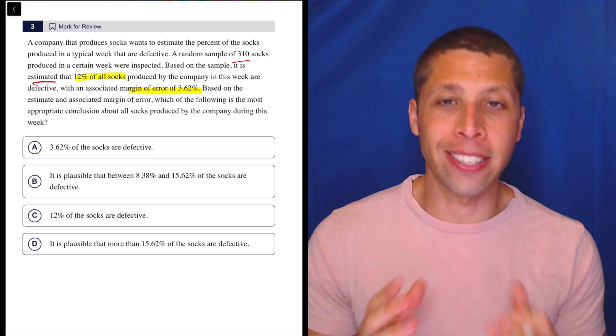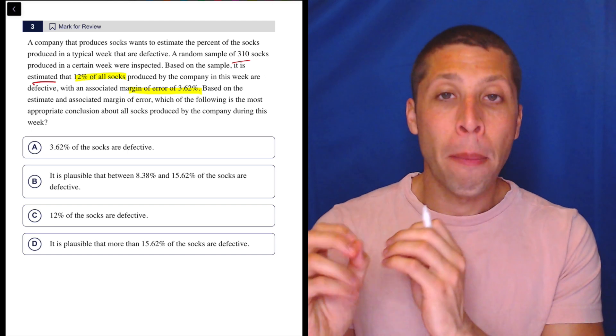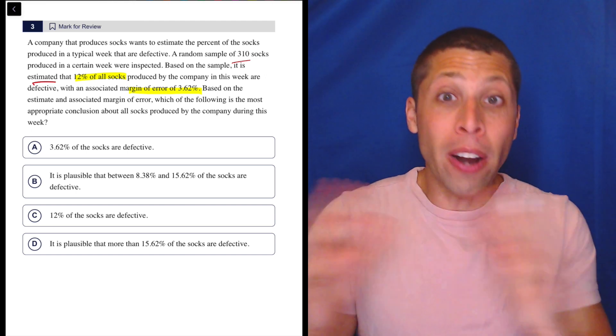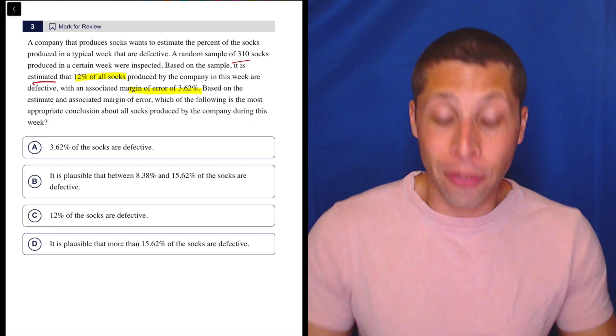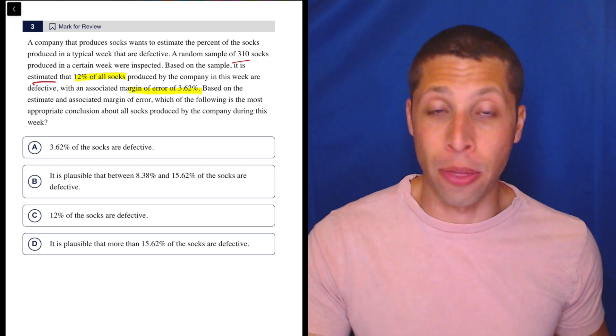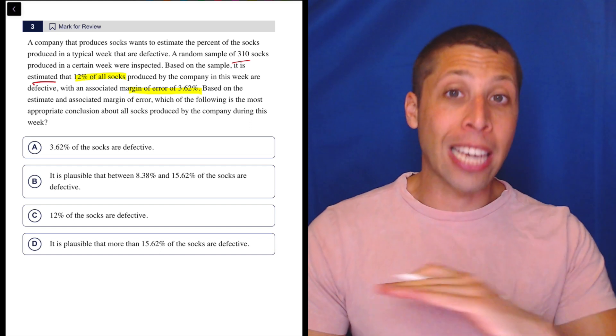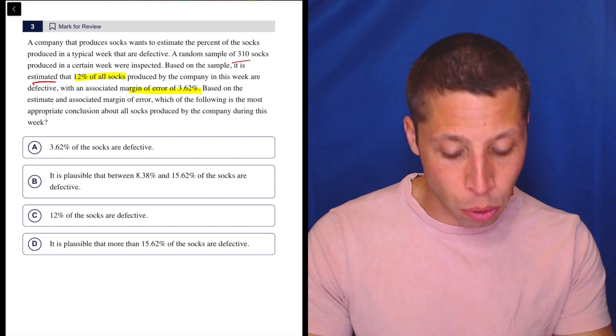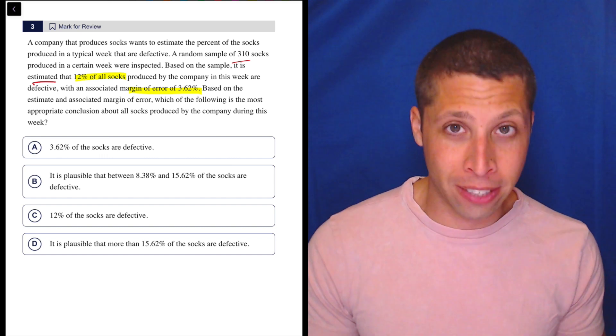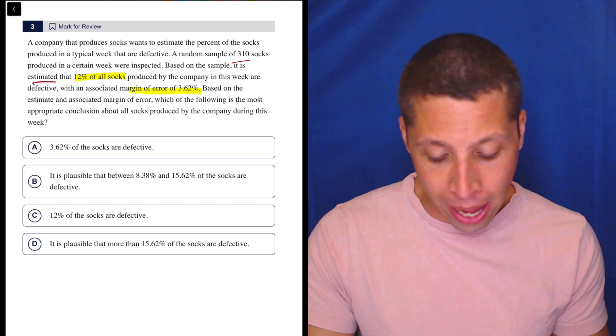Margin of error is accounting for that and saying our average in this sample may be off, but it's very unlikely to be more off than what this range is going to do, more off than 3.62%. So we never have to calculate margin of error. They're just going to give it to us, but we want to basically find what's sometimes called a confidence interval around that central value.